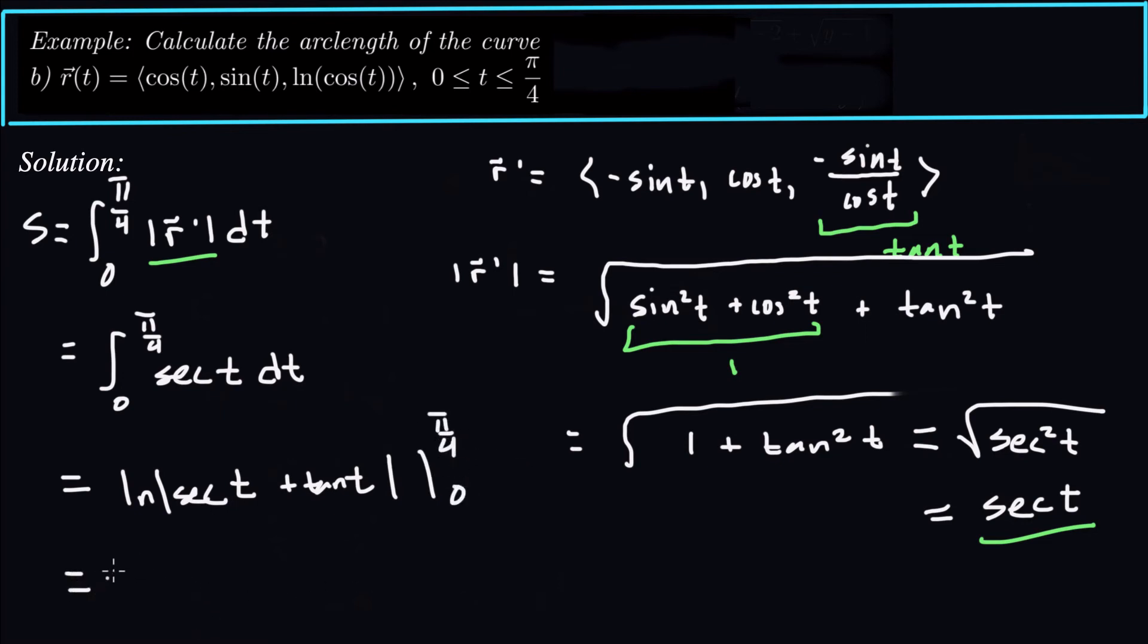Now, plugging in those bounds, that's going to be natural log of secant of pi over 4 is square root of 2 plus tangent of pi over 4, which is 1, minus natural log secant of 0 is 1 plus tangent of 0, which is 0. So natural log of 1 is 0. So actually, the answer is just natural log absolute value 1 plus square root of 2. And that is the arc length.